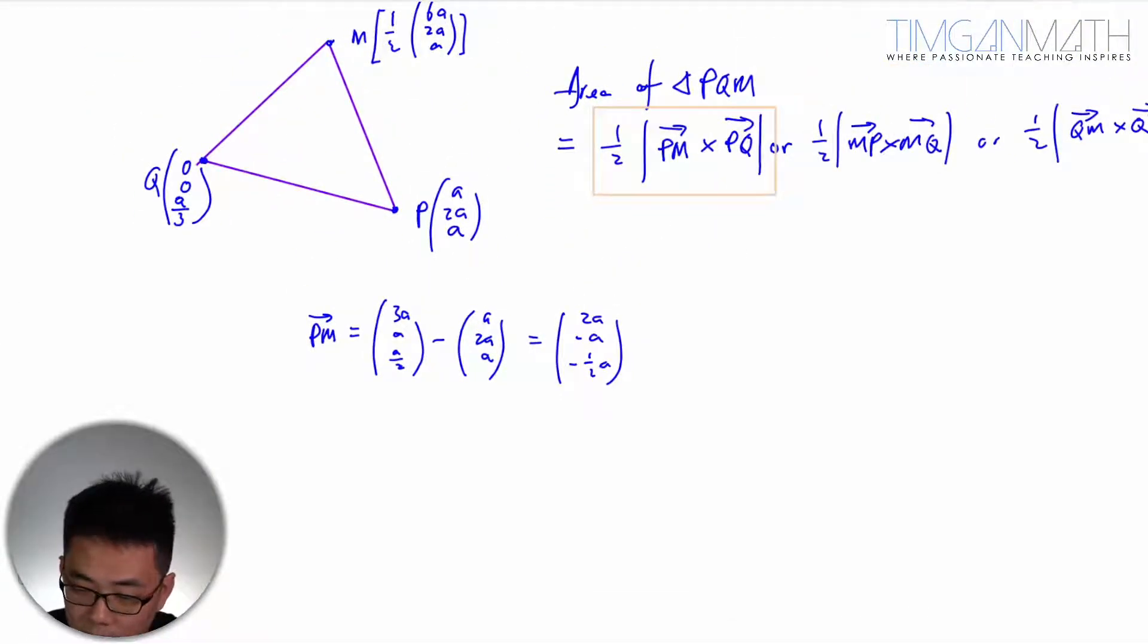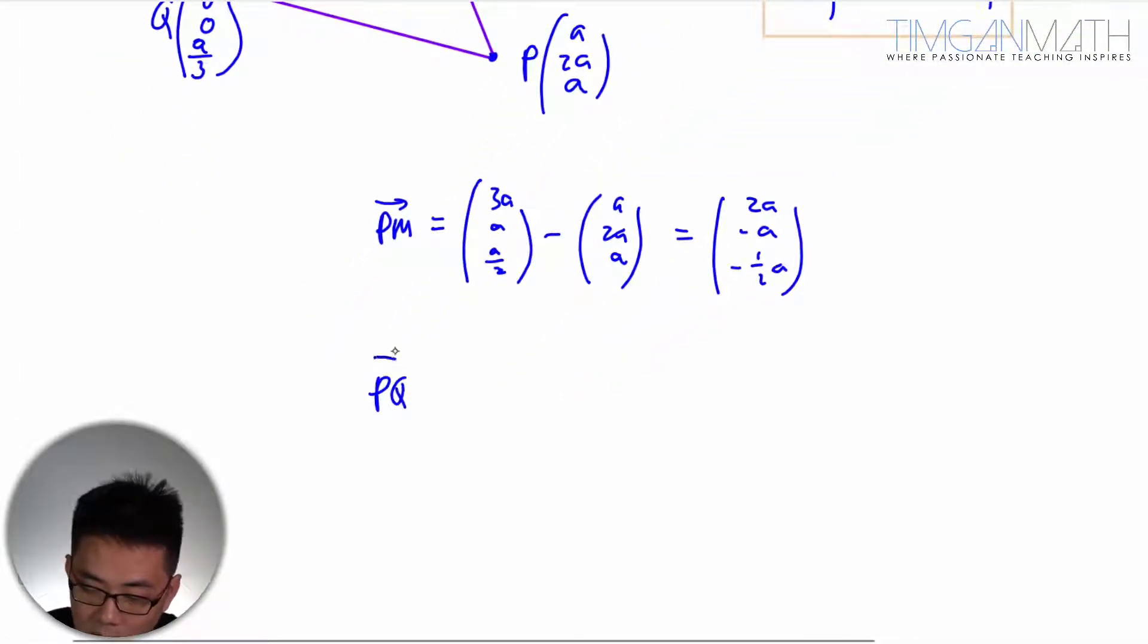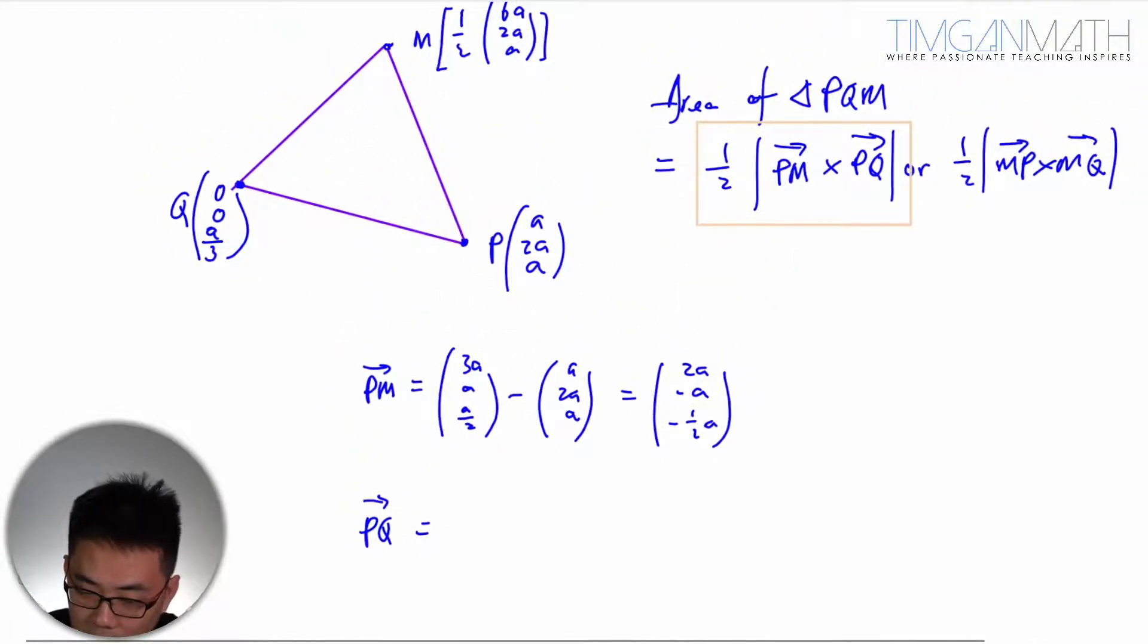Then we have got PQ. PQ would be Q minus P. Is minus A, minus 2A, and minus 2/3 A.